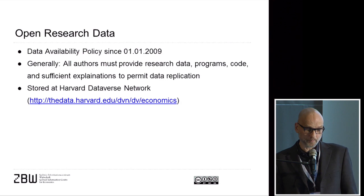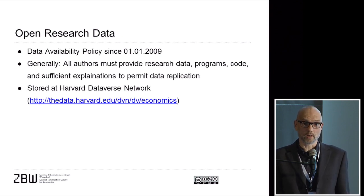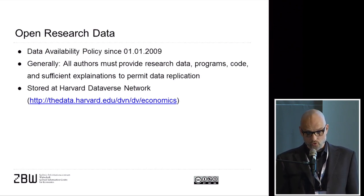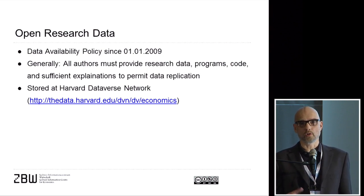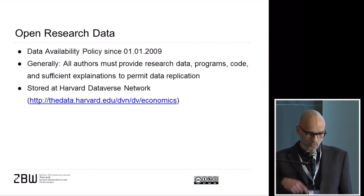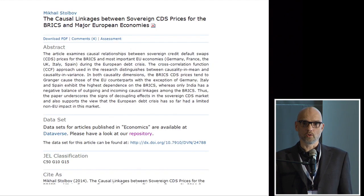The second point is open research data. We have had an open data availability policy since the beginning of 2009. All authors must provide research data as well as programs, code, and sufficient explanations to permit data replication. The data sets are stored at the Harvard Dataverse Network, which is mainly focused on social sciences including economics. It's a well-known software that you can install in your own institution to provide data sets. In the article, the link to the data set is named, and you come to a page at Dataverse where you can download and even analyze the files.